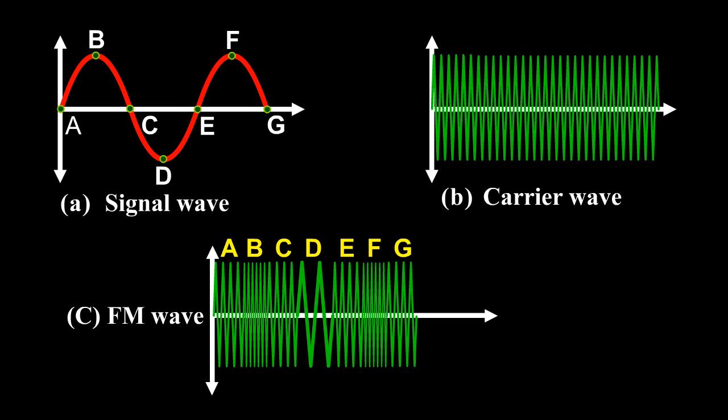The frequency of an FM transmitter without signal input is called the resting frequency or center frequency F₀, and this is the allotted frequency of the transmitter.